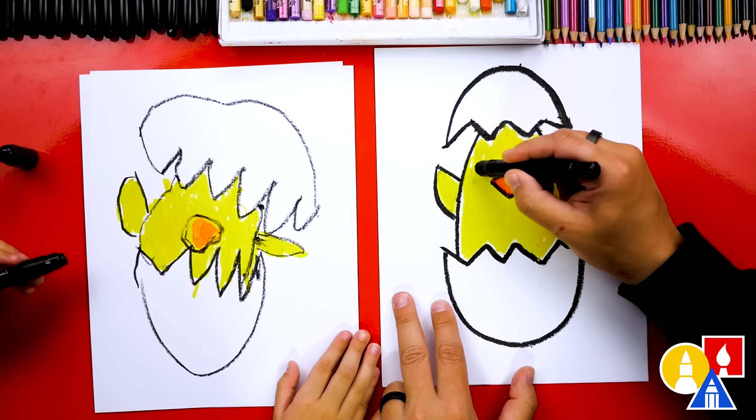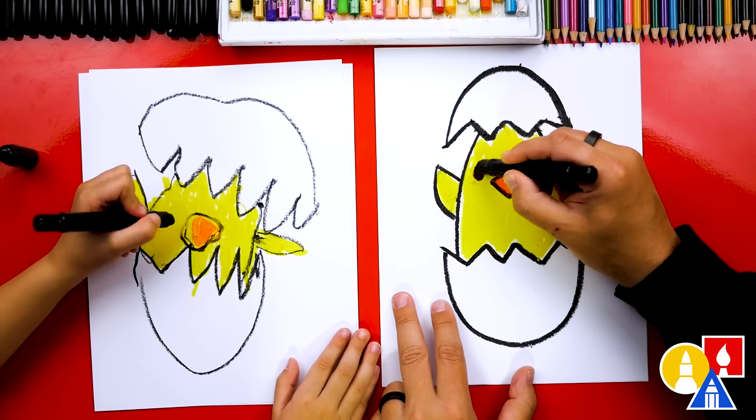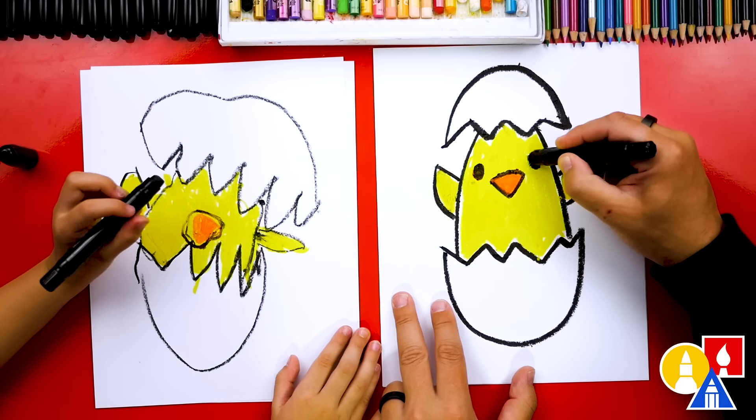Now let's draw the eyes. I'm going to draw a little circle or oval on the left and also over here on the right.